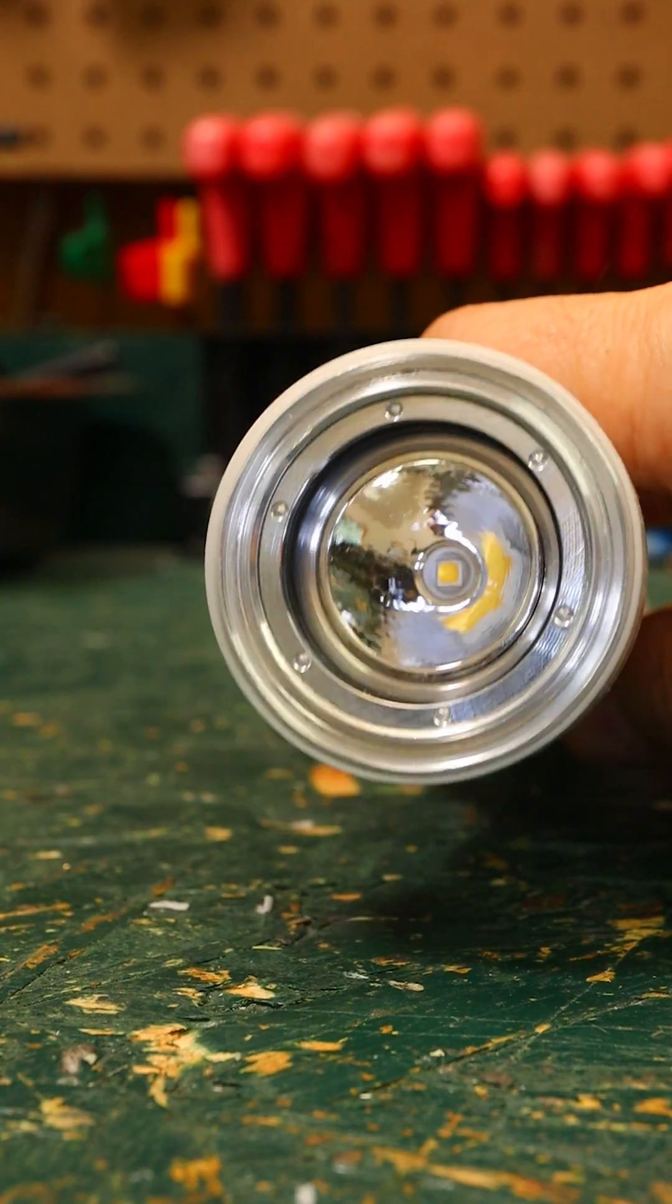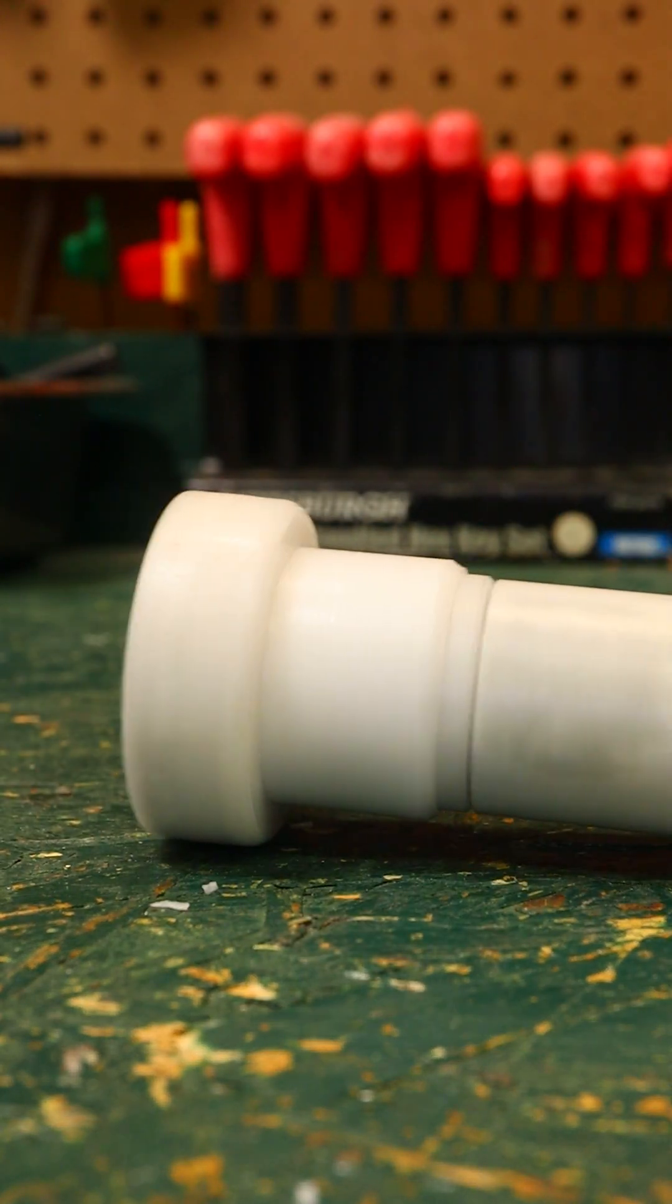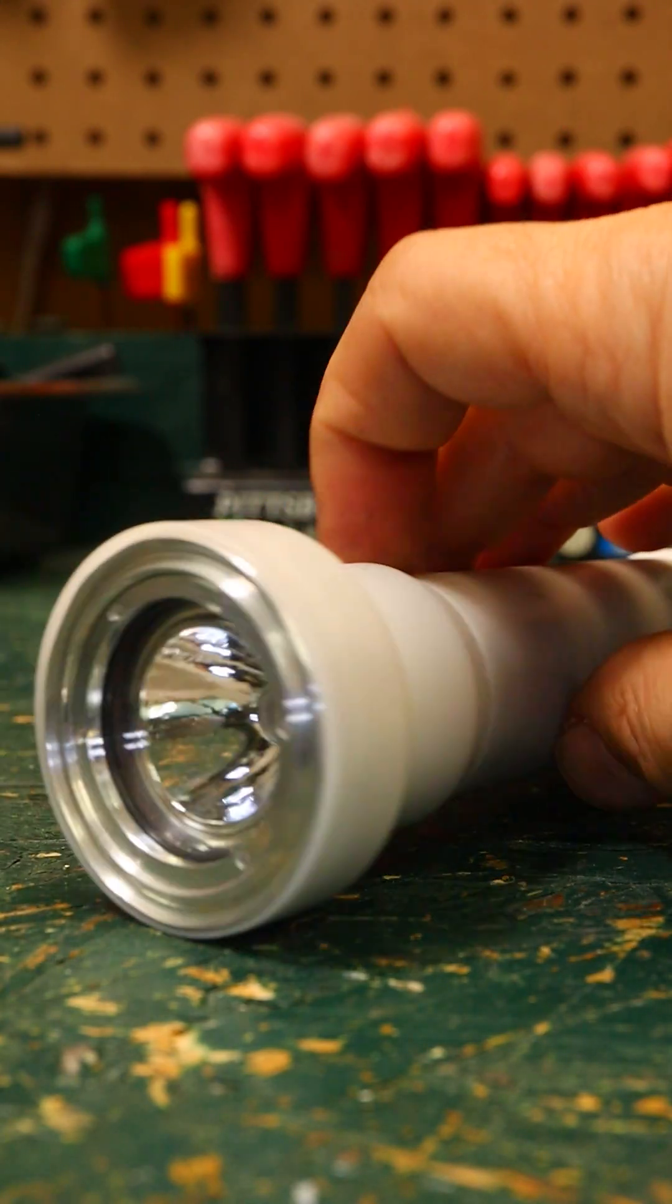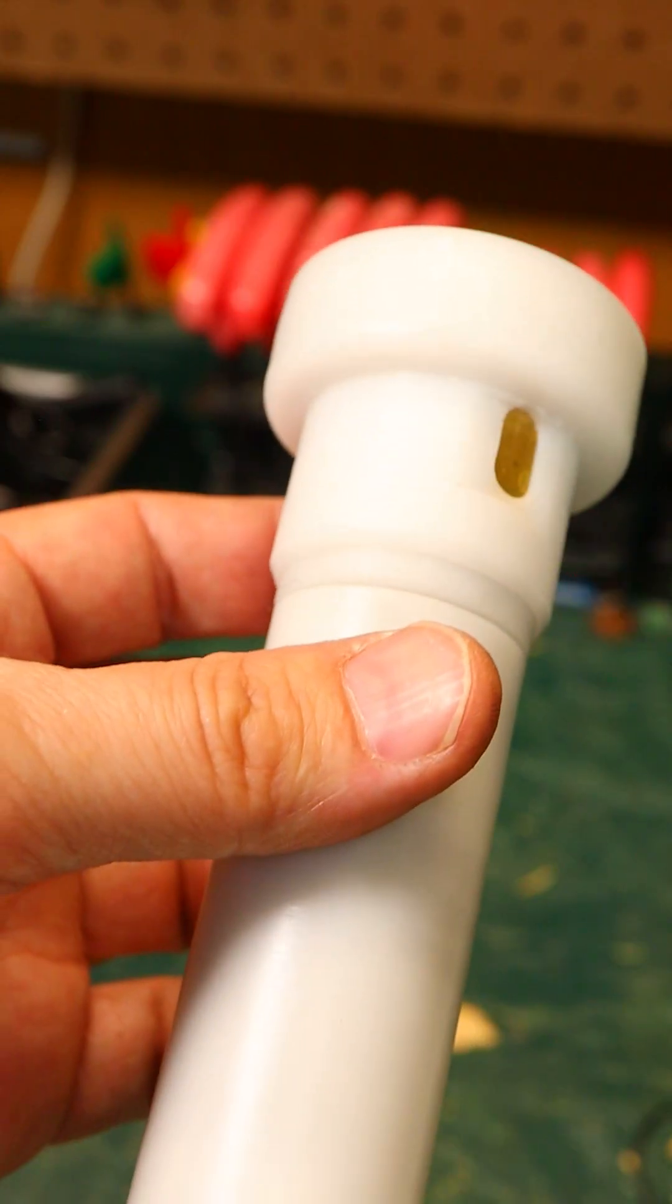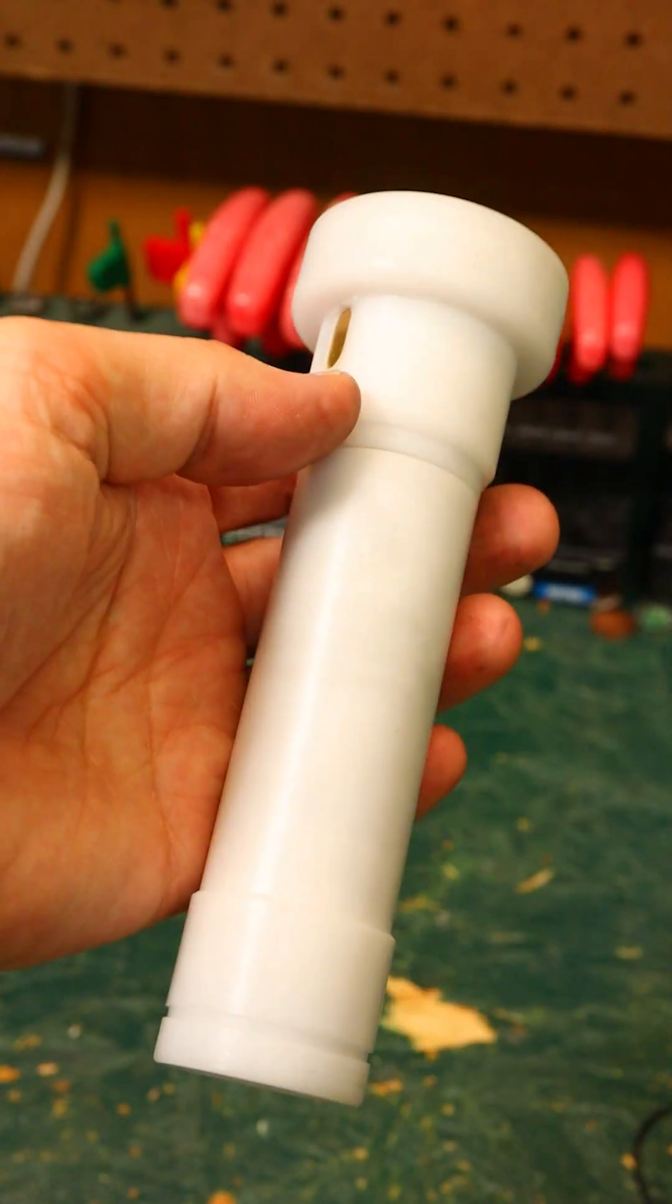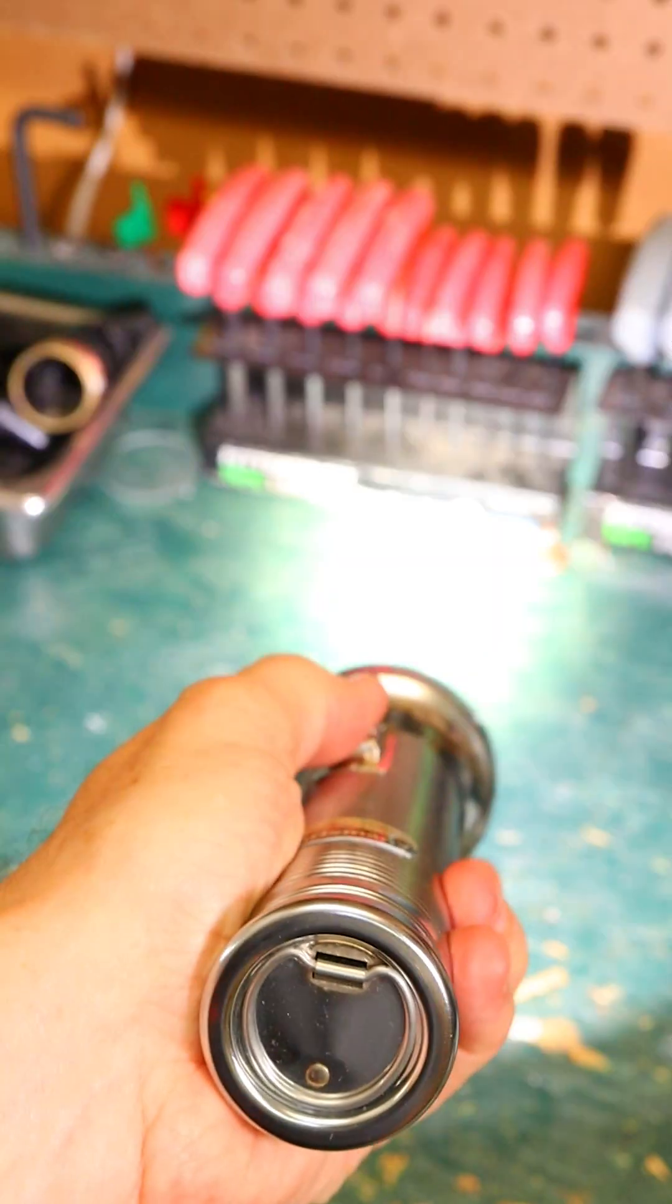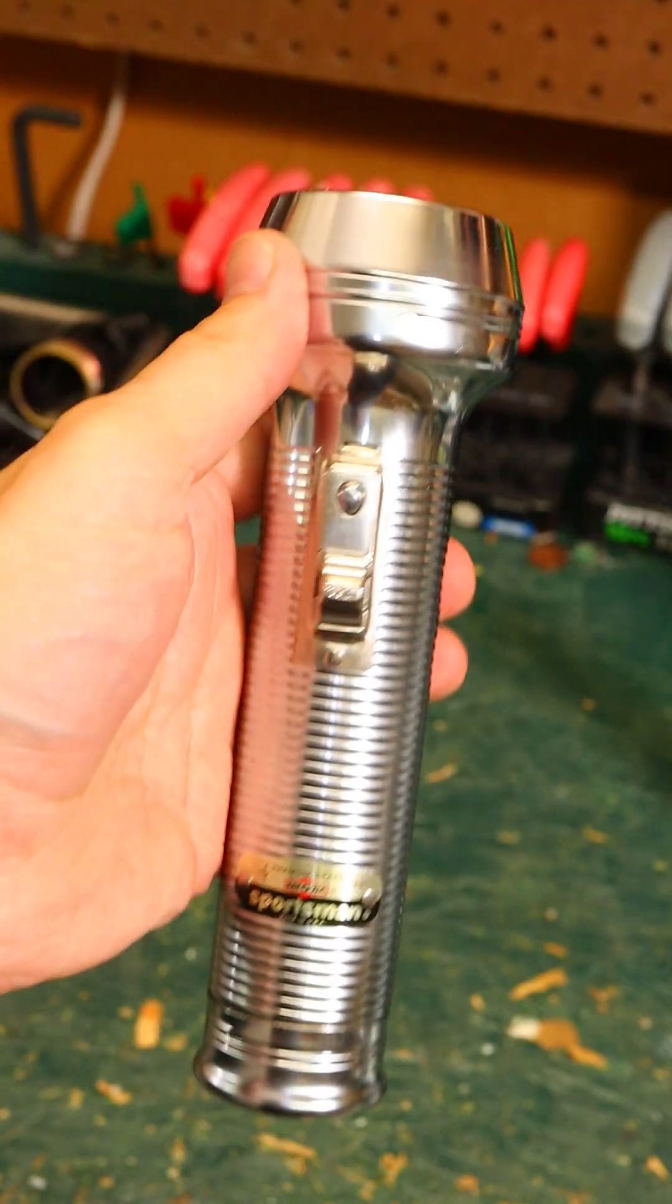For a detailed explanation of why that is, check out the linked video. One solution is to build the light engine from aluminum and then sleeve the entire thing in a non-conductive material like acetal. Then you can just poke a small hole in the acetal for the contact strip from the switch to deliver power to the light engine. The switch will then work, powering the light on and off as intended.